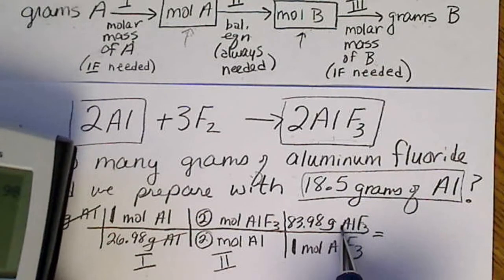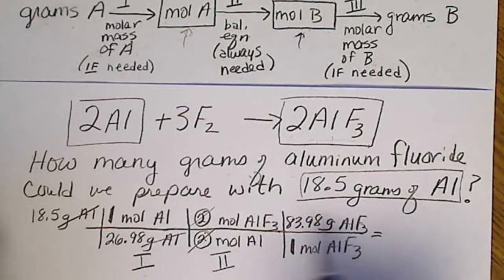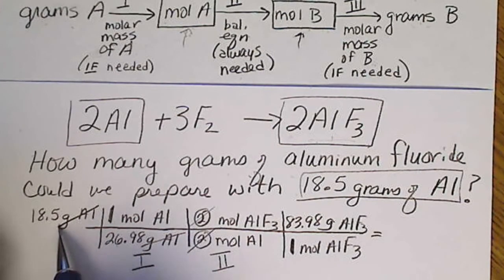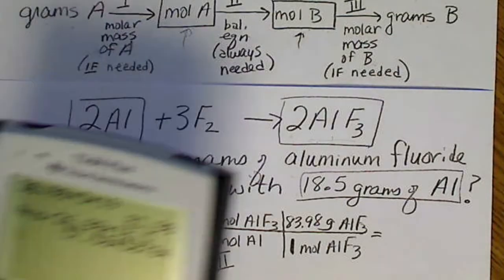And then that number is still in the calculator, so I'm going to not even multiply by those. I'm going to divide by 26.98 and multiply by 18.5.